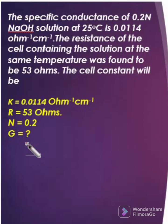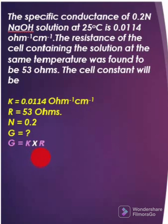They are asking you to calculate cell constant G. So what is the formula for calculating the cell constant G? G is equal to kappa into R.